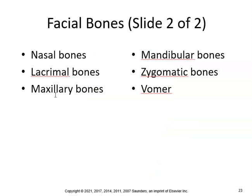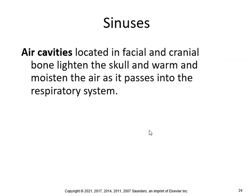Other facial bones include the nasal, lacrimal, maxillary, mandibular, zygomatic, and vomer bones. The sinuses are air cavities located in facial and cranial bones. They lighten the skull and warm and moisten air as it passes into the respiratory system.